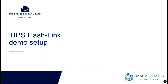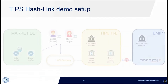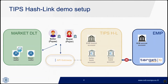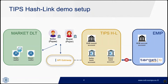The reference setup for today's TIP/HashLink demo consists of a market DLT platform shown on the left-hand side. The yellow square in the middle represents the TIP/HashLink infrastructure operated by Banca d'Italia in a private cloud environment. The last square on the right-hand side corresponds to T2, the real-time gross settlement system owned and operated by the Eurosystem, used to implement the escrow mechanism.